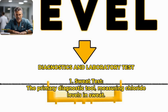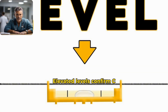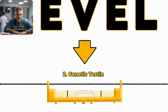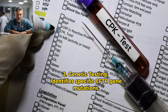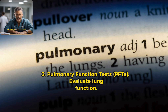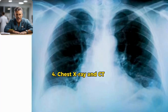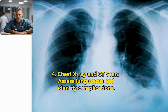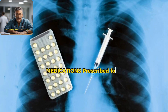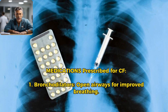Diagnostics and laboratory tests: 1. Sweat test — the primary diagnostic tool measuring chloride levels in sweat; elevated levels confirm CF. 2. Genetic testing — identifies specific CFTR gene mutations. 3. Pulmonary function tests (PFTs) — evaluate lung function. 4. Chest X-ray and CT scan — assess lung status and identify complications.